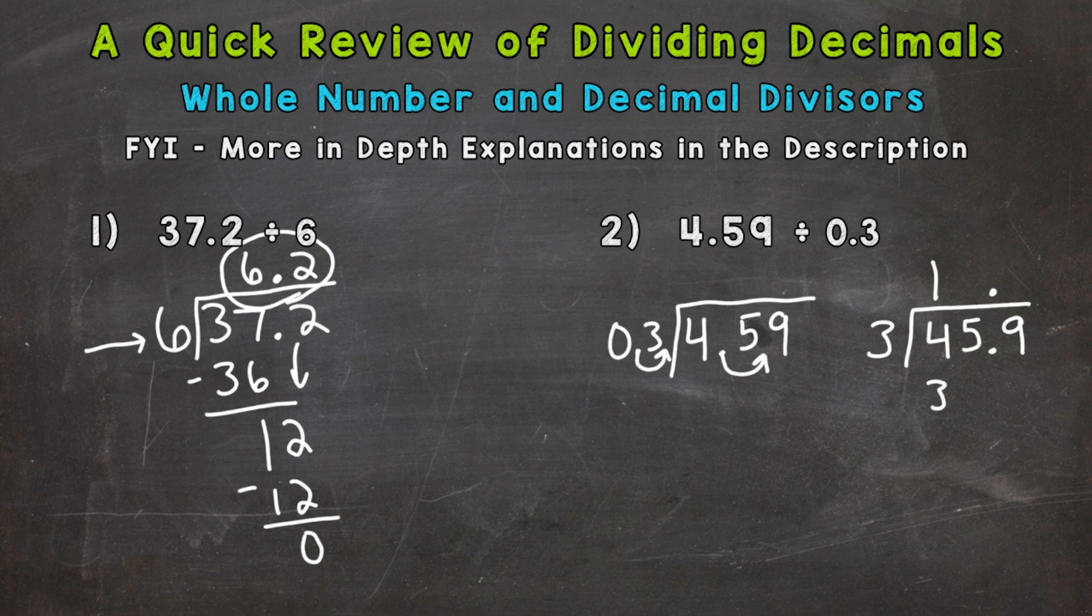15 divided by 3 is 5. 5 times 3 is 15. Subtract, we get 0. Bring down the 9, and we have 9 divided by 3, which is 3. 3 times 3 is 9. Subtract to wrap this problem up, and we get 15.3. So there you have it—a quick review of dividing decimals.